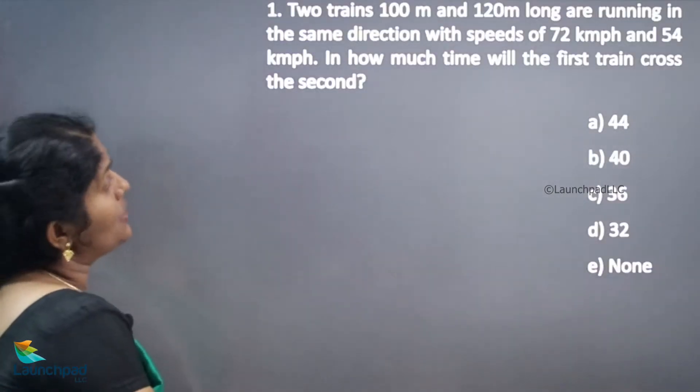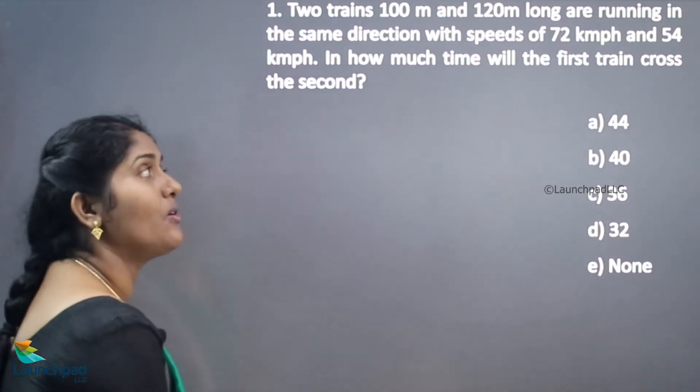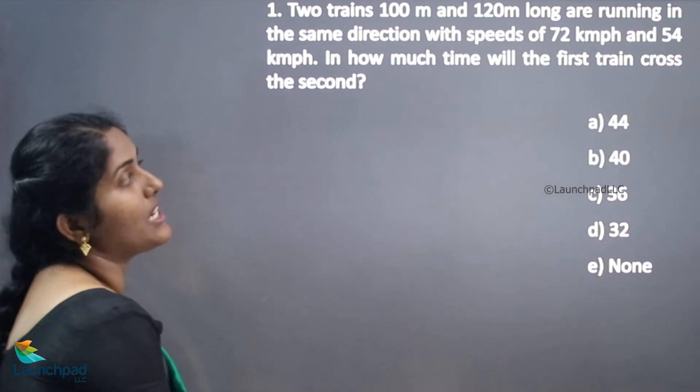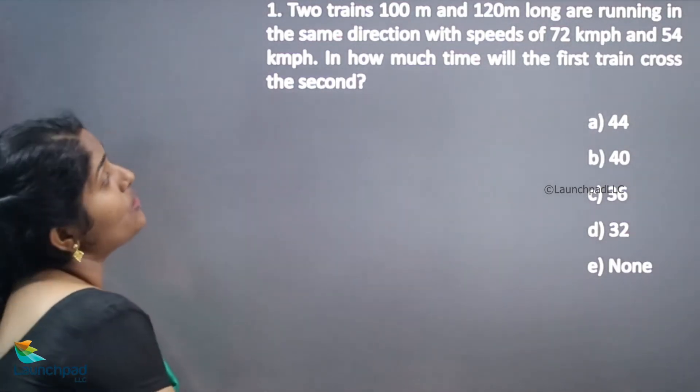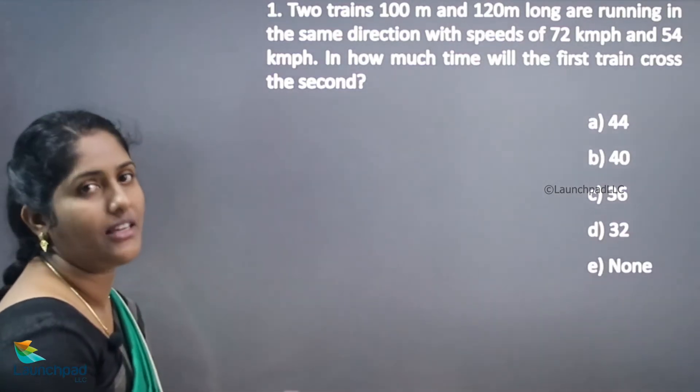This is your question. Two trains 100 meter and 120 meter long are running in the same direction with speeds of 72 kilometer per hour and 54 kilometer per hour. In how much time will the first train cross the second train?